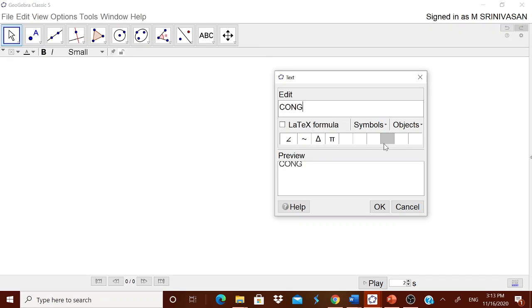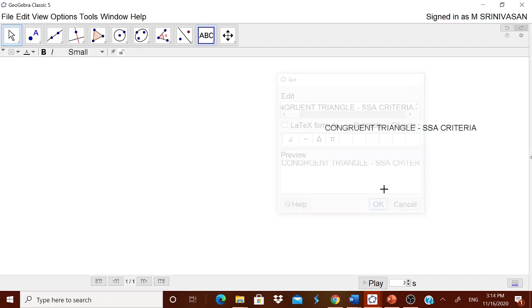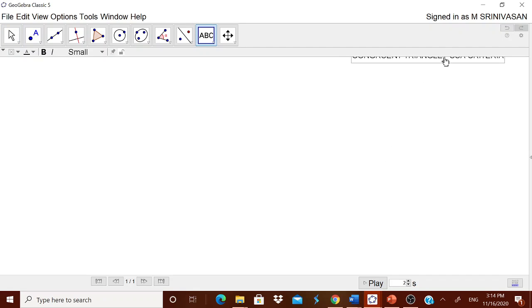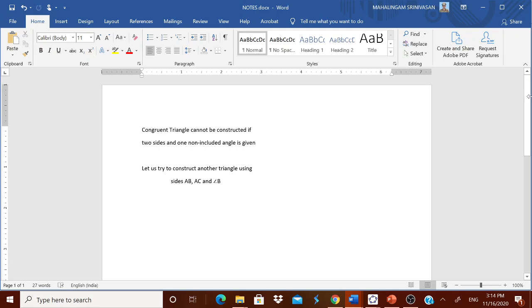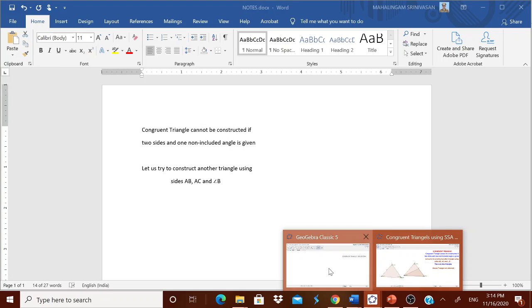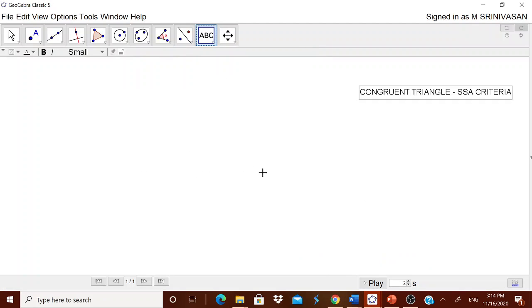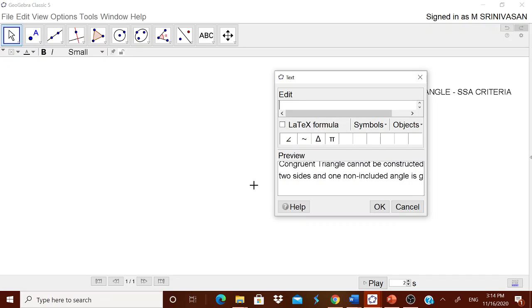In the ABC text we will tell them that congruent triangle SSA criteria, we will ask the children is it possible, okay, then we will tell them that it is not possible by making the following statement. I already have typed it: congruent triangle cannot be constructed if two sides and one non-included angle is given. Go to this ABC and then simply I am pasting it. Clicking okay.